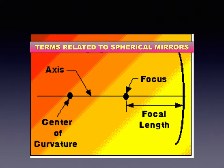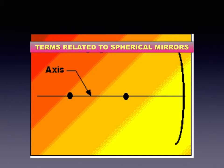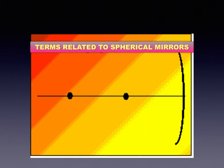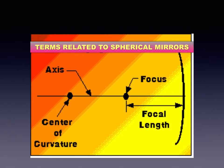Principal axis: the straight line passing through the pole and center of curvature of the mirror is called its principal axis. Principal focus: incident rays parallel to the principal axis of a concave mirror, after reflection, meet at a particular point in front of the mirror on the principal axis, called the principal focus, marked by the letter F. For a convex mirror, incident rays parallel to the principal axis after reflection appear to come from a point behind the mirror along the principal axis, called the principal focus of the convex mirror. Focal length: the distance between the pole and the principal focus of the mirror is called the focal length, which is half of the radius of curvature.